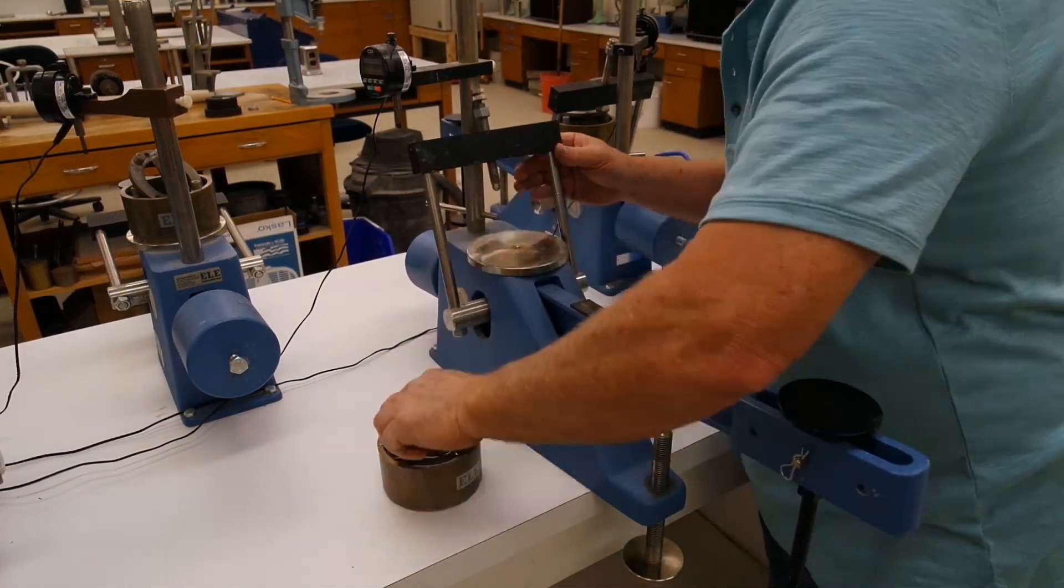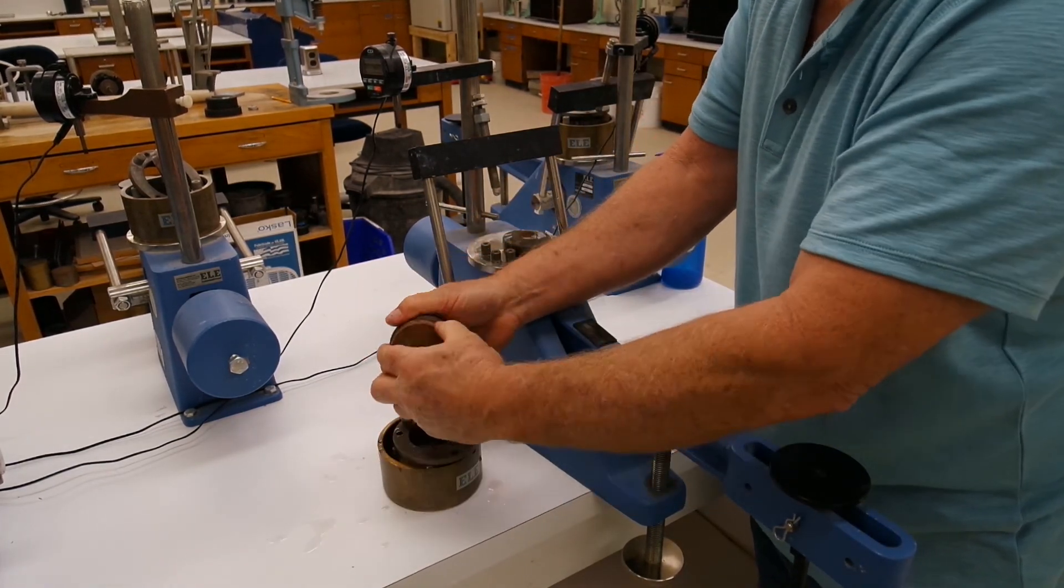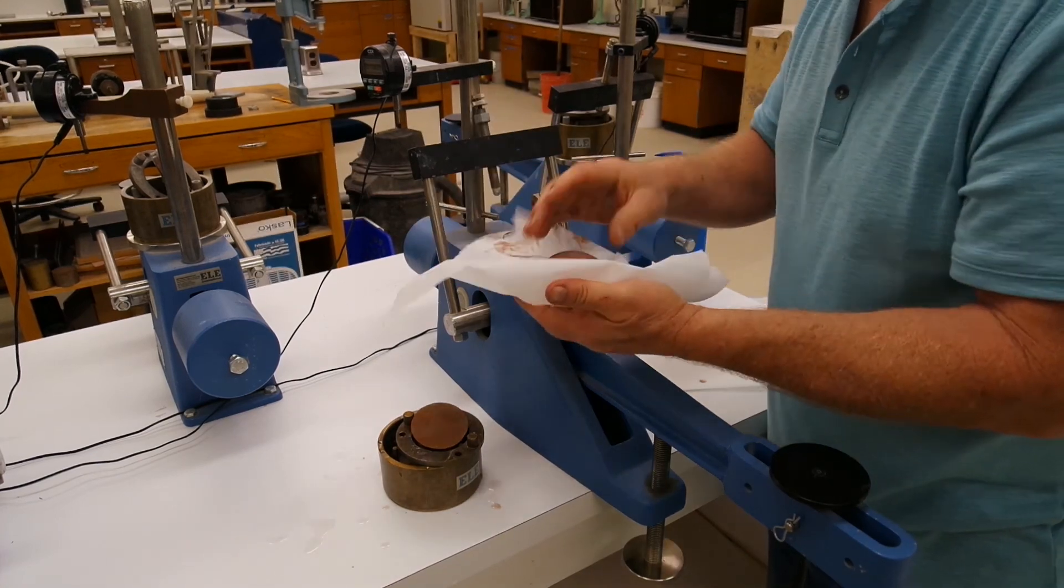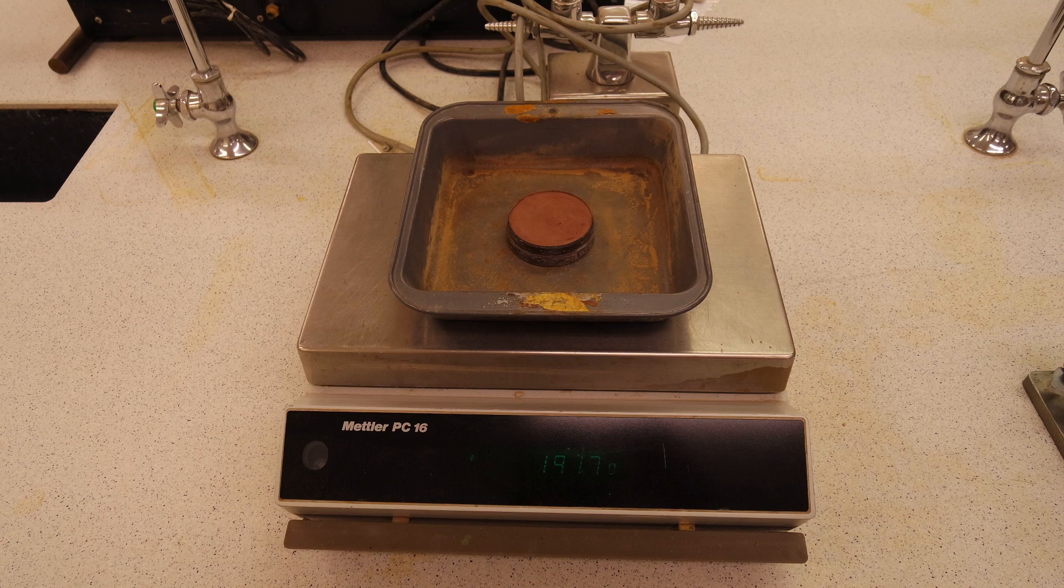Dry the ring and the soil of any excess water and weigh the ring and wet soil. We will then place both the ring and the soil in the oven to get a dried weight of the sample.